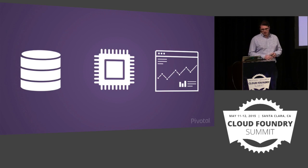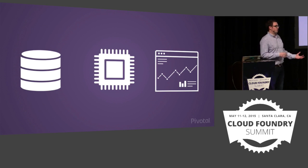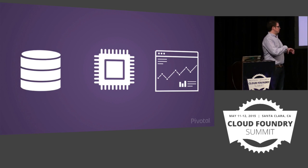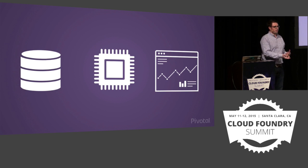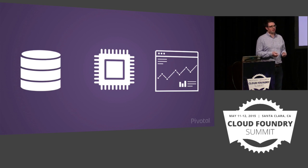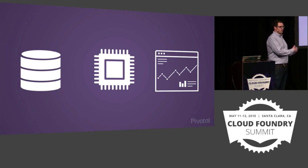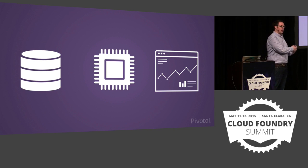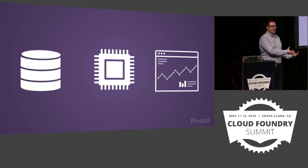What does a data scientist really need out of a platform? It boils down to three things. First, we need somewhere to store data and some easy way to capture it — for example, in the Internet of Things, a wide variety of different types of data coming in from different devices. We need to channel that data somewhere, store it long-term, and be able to access it easily rather than having it in long-term storage that's very hard to get at.